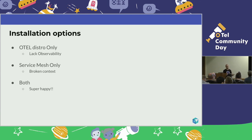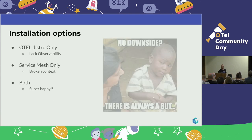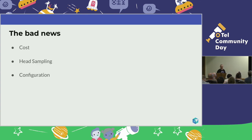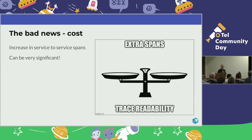But we need to talk about the real stuff — the bad news. I'm going to discuss three things that are affected: cost, head sampling, and configuration. First, introducing service mesh increases overall cost. By 'cost' I don't mean just vendor dollars — even self-managed, you'll generate more spans. Adding at least one or two more spans for every network activity can sum up to significant cost.